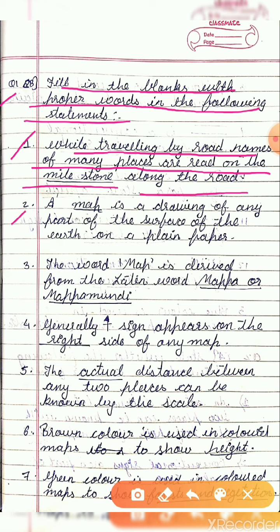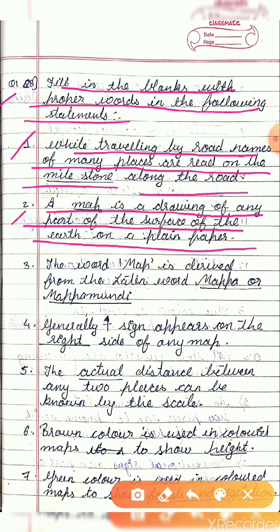Statement 2: A map is a drawing of any part of the surface of the earth on a plain paper. So the answer is map.